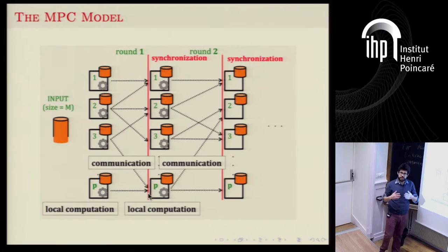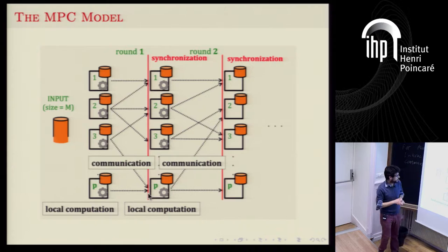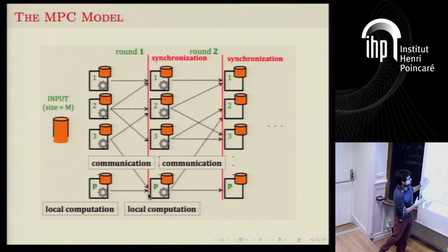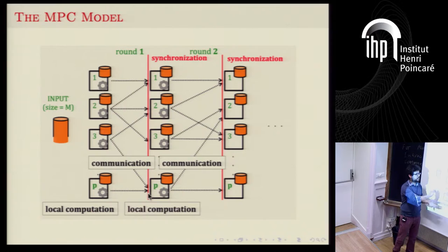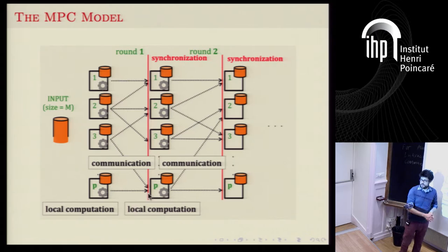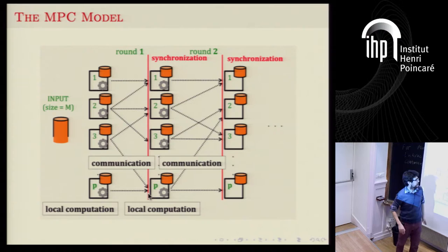For lower bounds, the data will be adversarially distributed. For upper bounds, we again assume no knowledge about the distribution. Each machine does some local computation by looking only at its local data. Then the servers can communicate — they can send any message to any other server. There's a synchronization barrier where everyone waits, and then again you do some local computation, send some more data, and so on. The synchronization barriers define how many rounds you have in a computation.